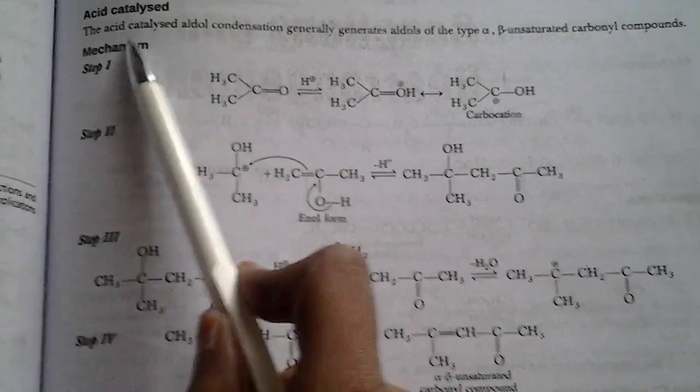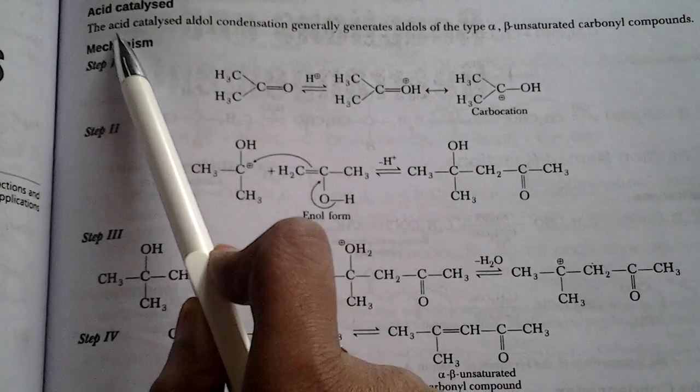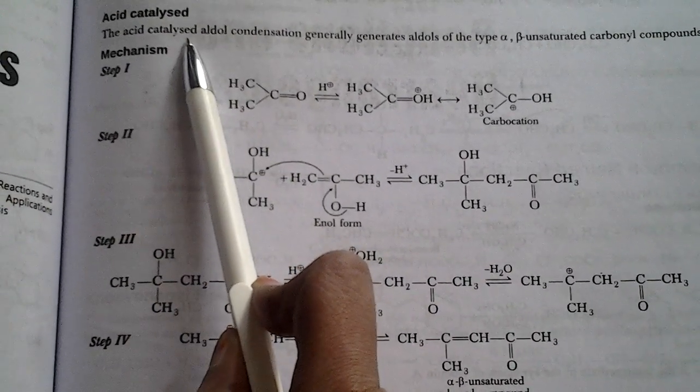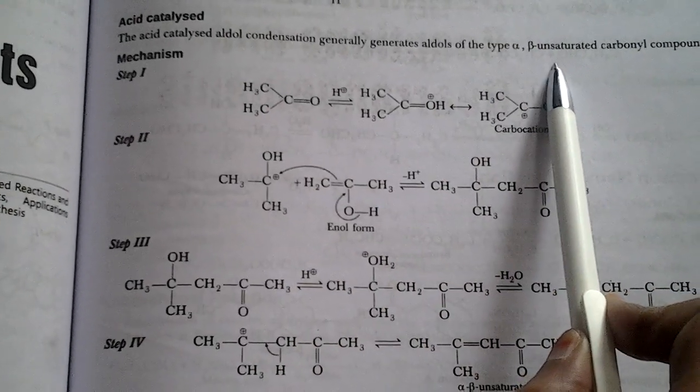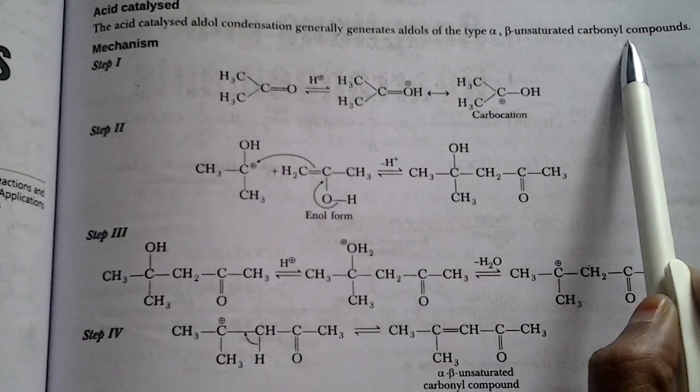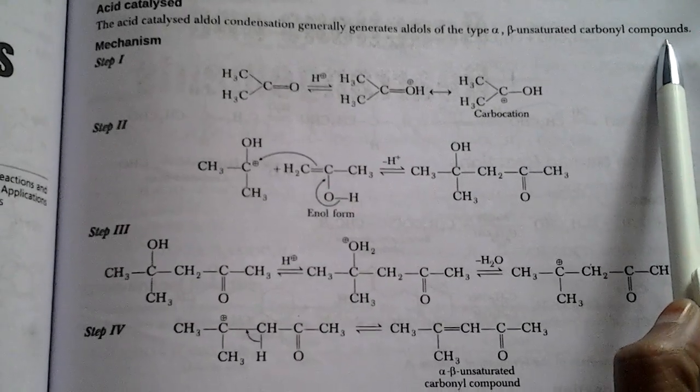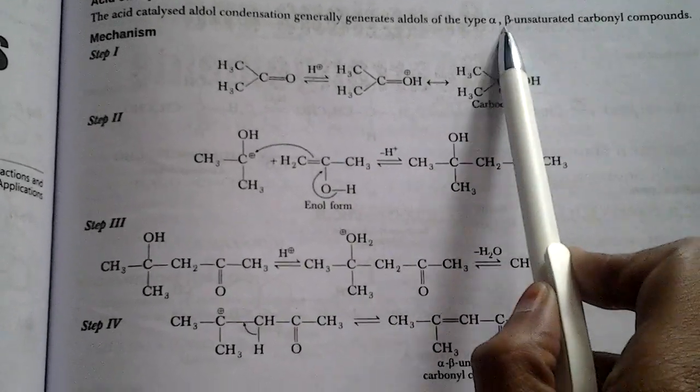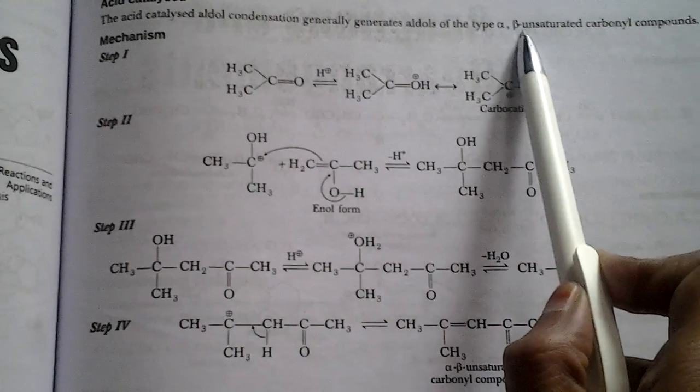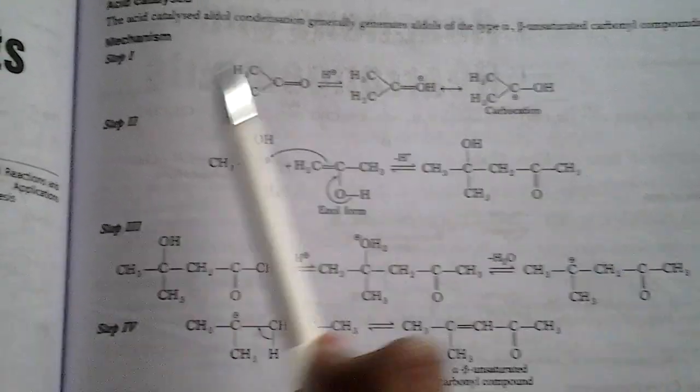In this, the acid-catalyzed aldol condensation will generate aldols of the alpha-beta unsaturated carbonyl compounds type, meaning unsaturation will be seen in the alpha and beta position. Now let us see the mechanism.